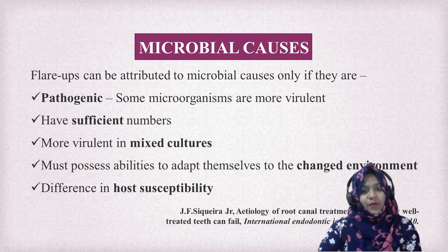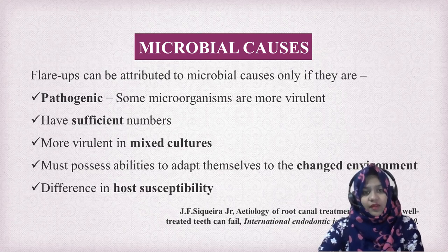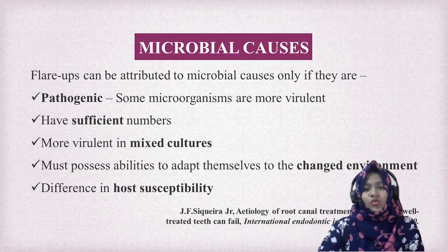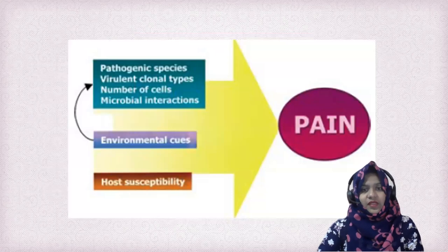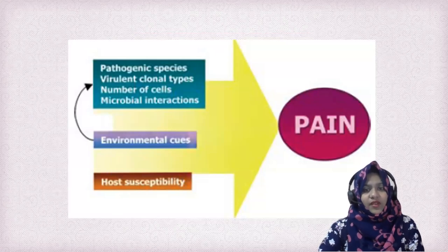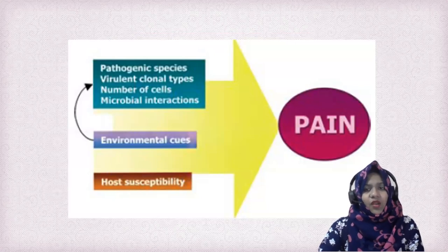The bacteria should have the ability to adapt to a changed environment, and there should be differences in host susceptibility. The pathogenic species, virulent cloning types, high amount of cells, microbial interactions, changes in the environment, and decreased host susceptibility all lead to inter-appointment flare-up and pain.